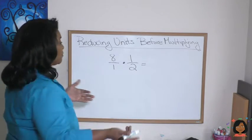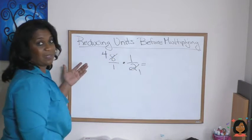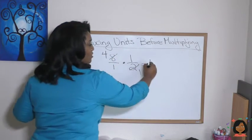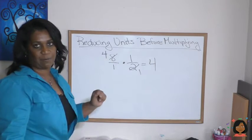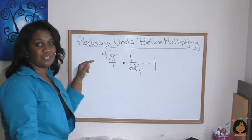But if we reduce before multiplying, we see the 2 and the 8 go into each other. We are simply left with a 4 times 1, and it's 4. Now that's an easy problem, but when we have these really big numbers, it makes our life easier to reduce first.